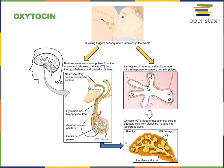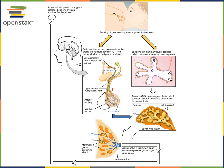Oxytocin is also involved in a positive feedback loop that stimulates the release of milk during suckling. When an infant suckles, it stimulates sensory receptors in the areola and nipple that relay information to the hypothalamus, stimulating the neurosecretory cells that secrete oxytocin from the posterior pituitary gland. Oxytocin then binds to receptors on myoepithelial cells in the mammary gland, stimulating contraction that releases milk as it pools in lactiferous ducts and then the lactiferous sinus, and this milk will be secreted out of the mammary gland, rewarding the infant who continues suckling, stimulating more oxytocin secretion in a positive feedback loop.